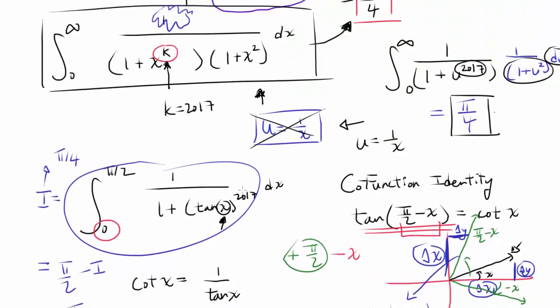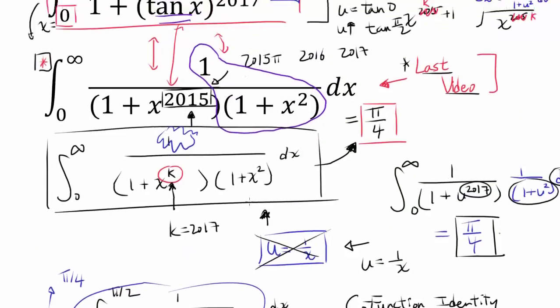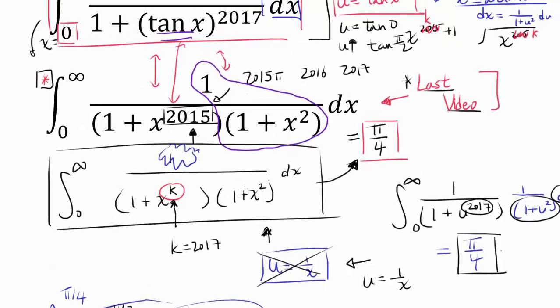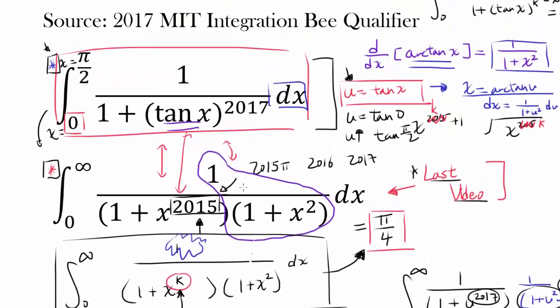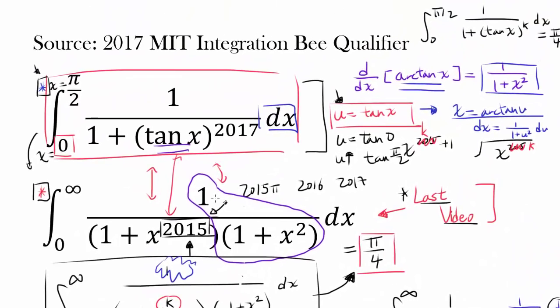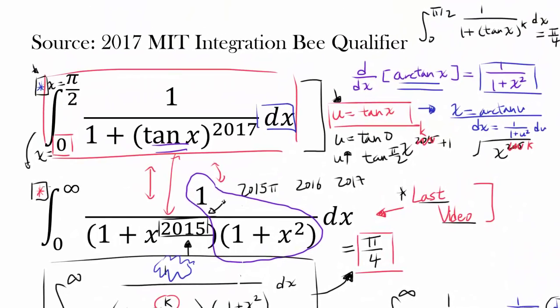So either way we arrive at the same answer of π/4. I wanted to show that these two questions are very closely related. Thank you.